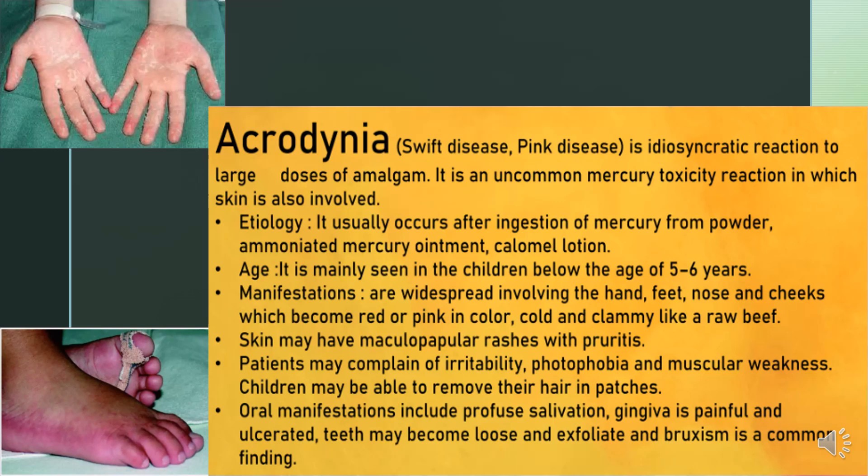Acrodynia is an uncommon mercury toxicity reaction in which the skin is also involved. It usually occurs after ingestion of mercury from powder, ammoniated mercury ointment, or calomel lotion. It is mainly seen in children below the age of five to six years. Manifestations are widespread involving the hands, feet, nose, and cheeks — basically the extremities — which become red or pink in color, cold and clammy like raw beef.